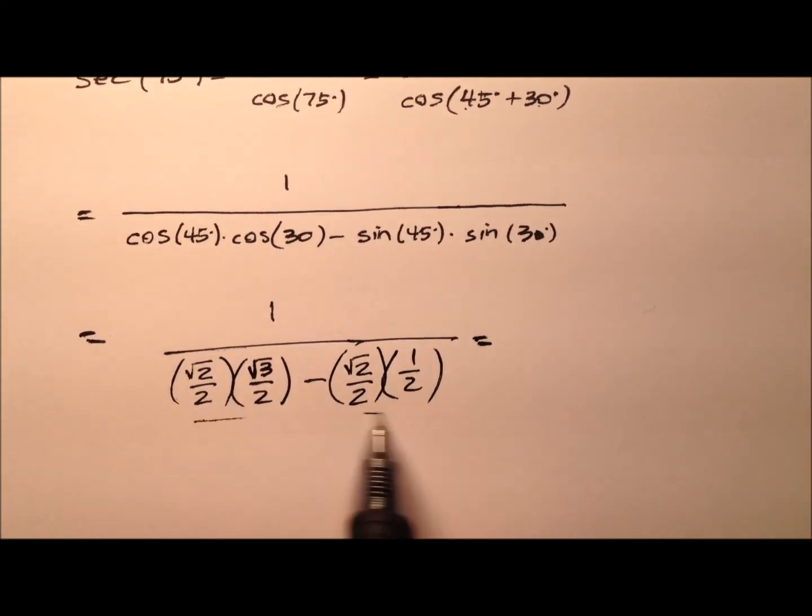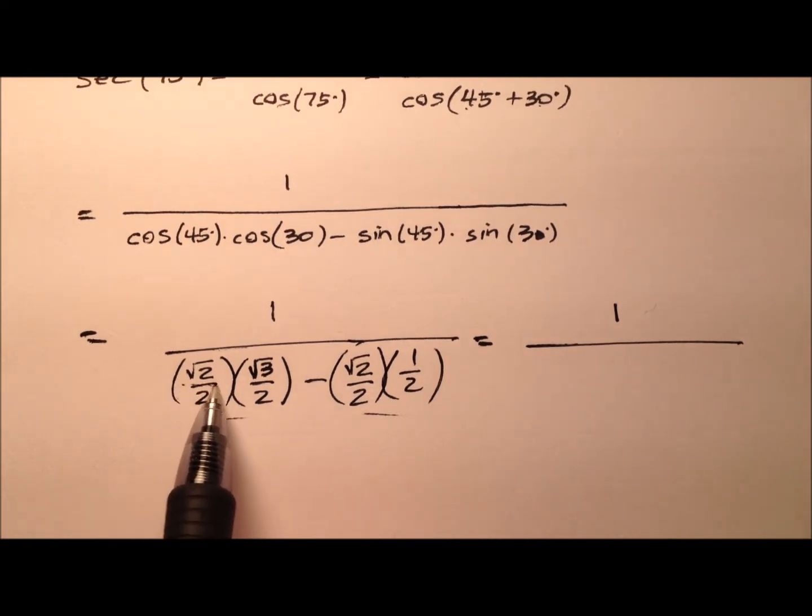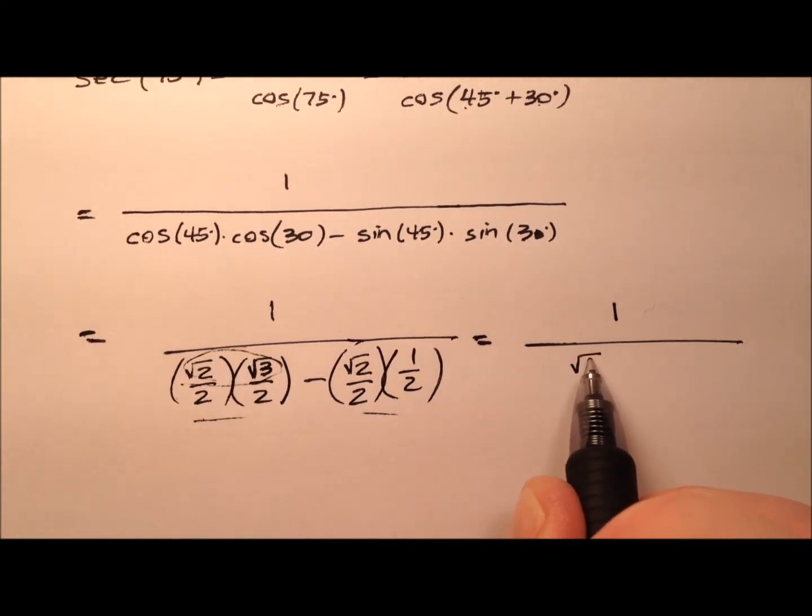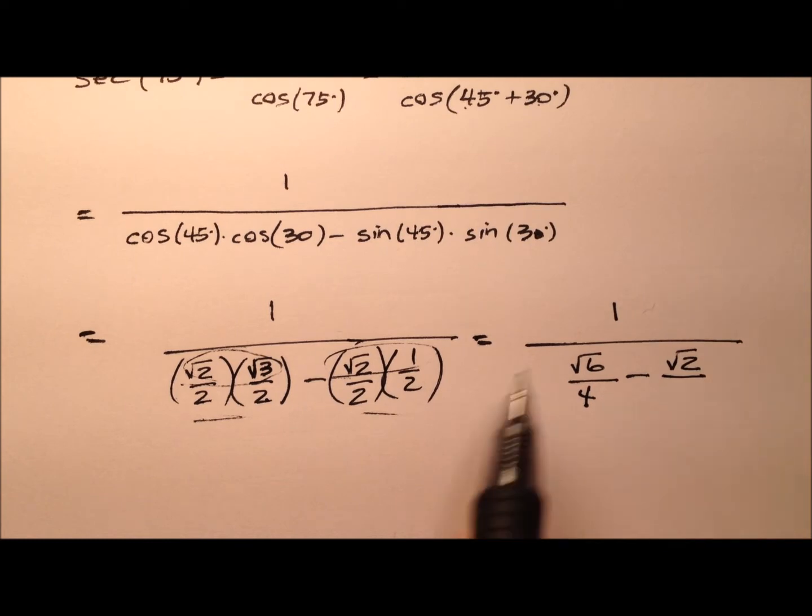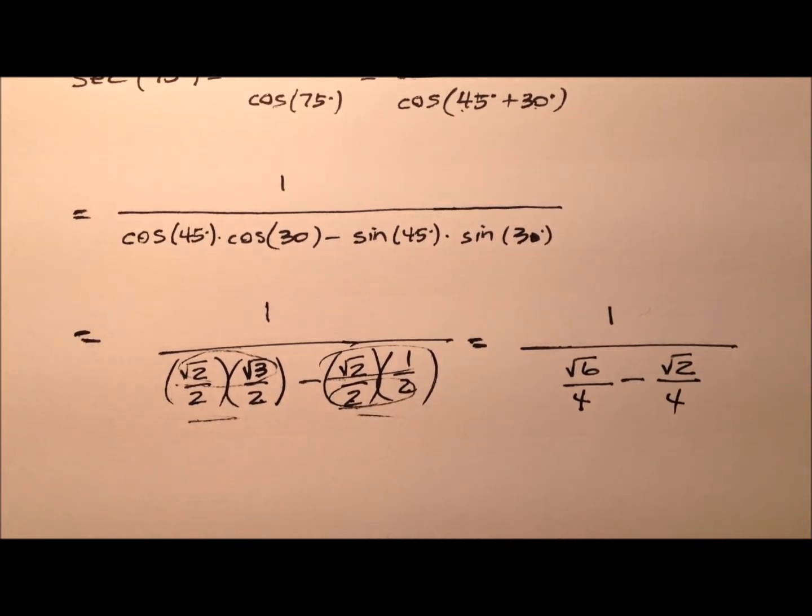So let's work these products. It's 1 over, so when I multiply, it's going to be the square root of 6 over 2 times 2, which is 4, minus the square root of 2 over that same denominator, 2 times 2 is still 4.